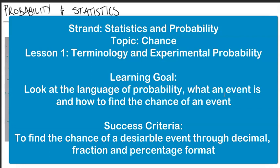And this is Lesson 1, we're just going to be looking at the terminology of statistics and probability, and more specifically chance, and what experimental probability is. Our learning goal is to look at the language of probability, what an event is, and how to find the chance of an event. The success criteria is to find the chance of a desirable event through decimal, fraction, and percentage format.